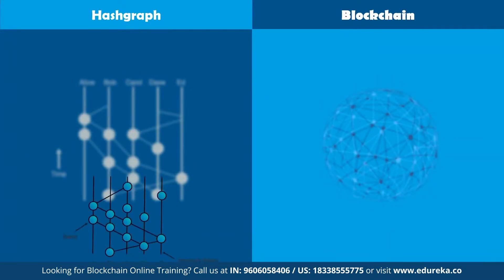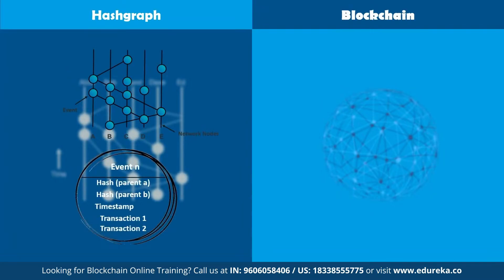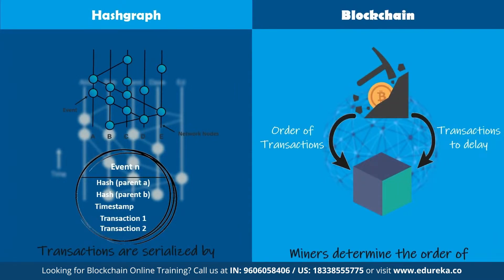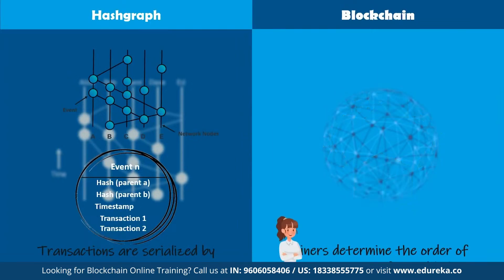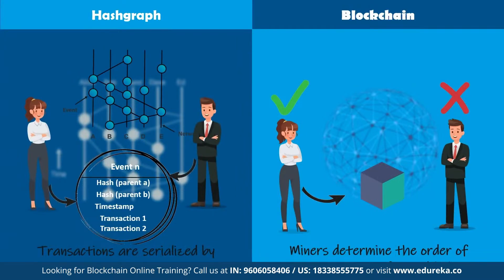Fairness refers to the ability of distributed ledger technologies to prevent nodes from manipulating the order of transactions. Hashgraph is fair because no single node can manipulate transactions, and transactions are serialized with cryptographic timestamping. In a blockchain, miners determine the order in which transactions are placed within each block — and transaction order can be extremely important. For instance, consider two people, Andy and Bob, transacting separately in a blockchain network. A blockchain miner can choose to include Andy's transaction and delay Bob's, which gets added later when processed by other miners. However, in a hashgraph, an individual must include both transactions in the order they were received.